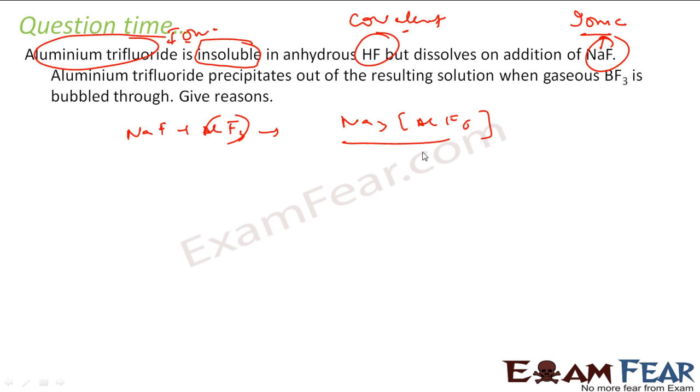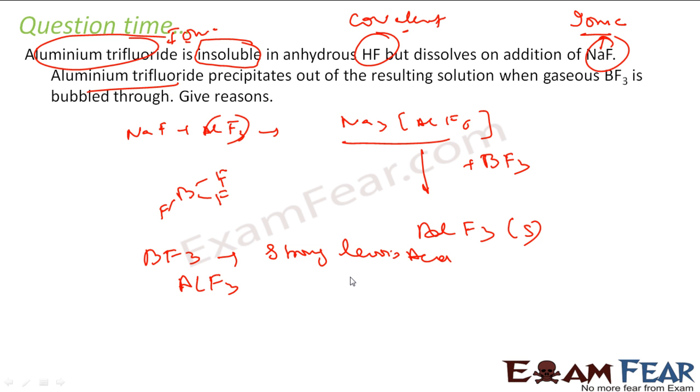Now the question says, once we have got the solution, in this solution you pass BF₃, BF₃ gases. Once you pass BF₃ gas, you see that Aluminum trifluoride, AlF₃ comes out. Why it comes out? That means BF₃ must be replacing AlF₆ here. That means BF₃ has to be a stronger Lewis acid than AlF₃. And that is true. You know that BF₃, it is electron hungry. It is a strong Lewis acid. You see the BF₃ structure. It has electron hungry, 6 electrons only: 2 plus 2 plus 2, electron hungry. So it is strong Lewis acid. But AlF₃, it is not the case.